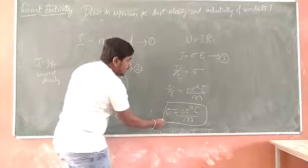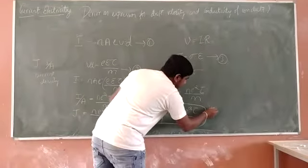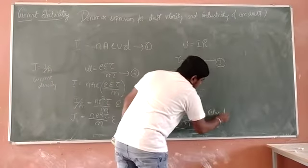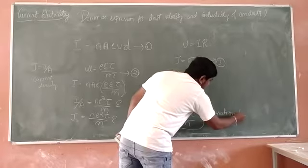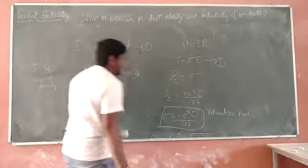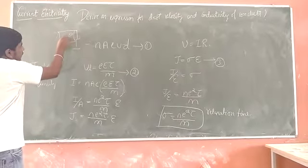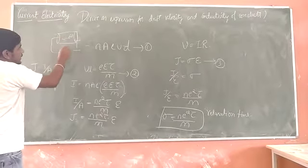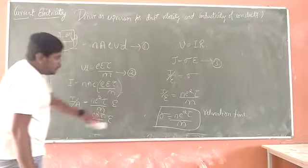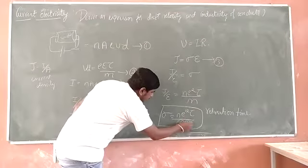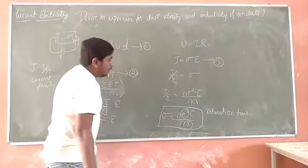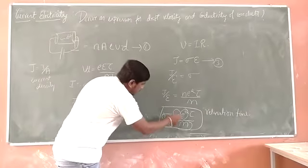Where sigma is conductivity of the conductor. Tau is called as relaxation time. In relaxation time mode, relaxation time mode is the time interval between two successive collisions of the free electron. Electrons move after the error, and time interval between two successive collisions is called as relaxation time tau. M is the mass of the electron, and E is the charge of the electron. N is number of electrons per unit volume.